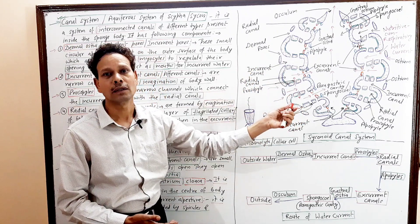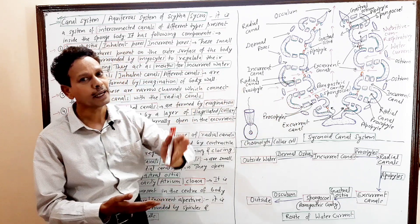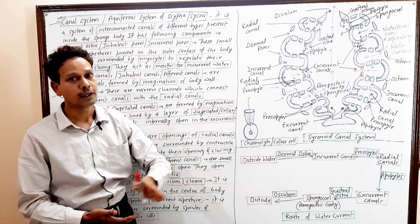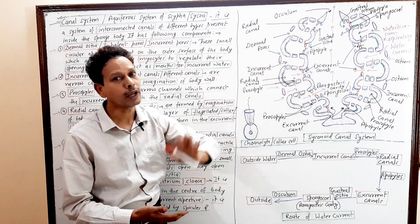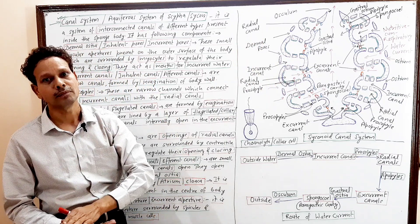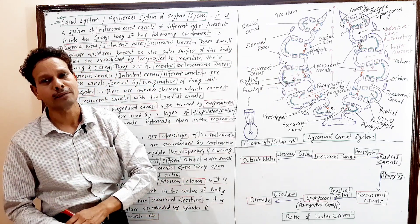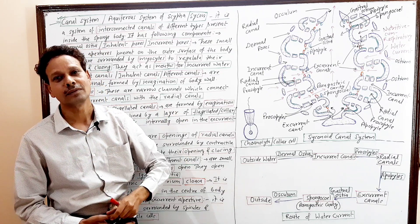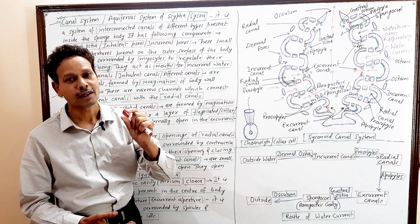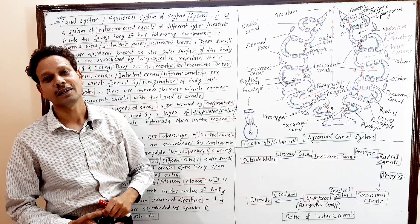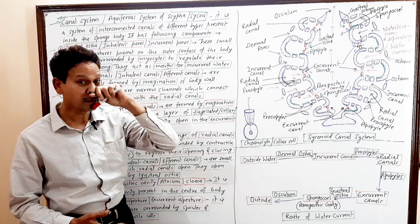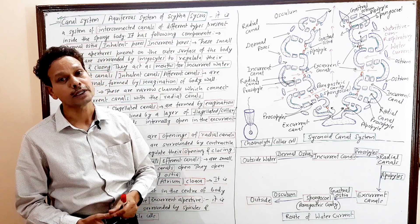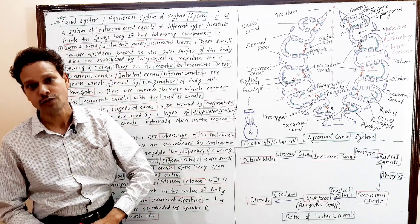The body wall has an outer layer called Pinacoderm, that is the dermal layer, and an inner layer called Gastroderm or Choanoderm. Between the outer and inner layers, the mesenchyme is present, in which several types of amoebocytes are present.